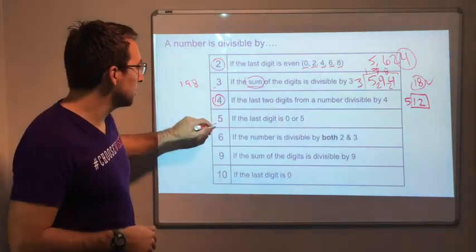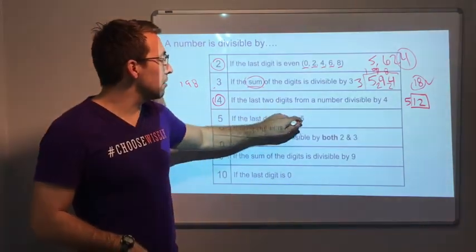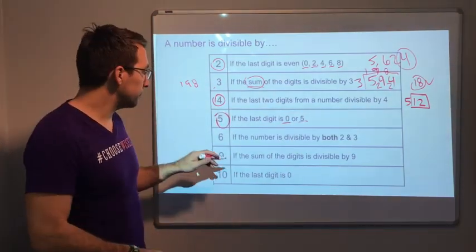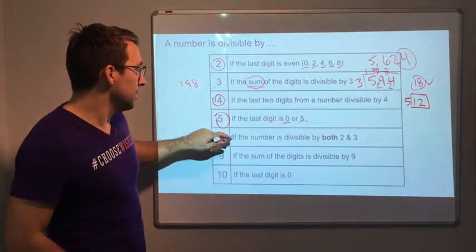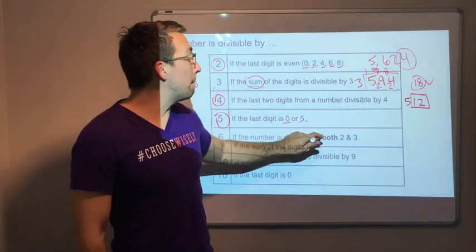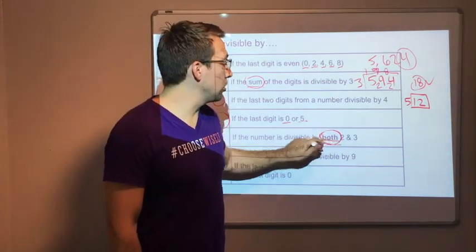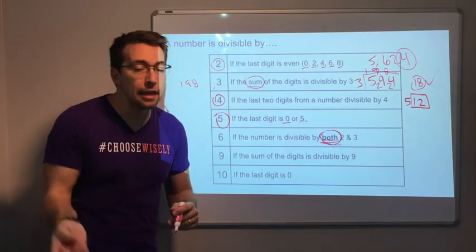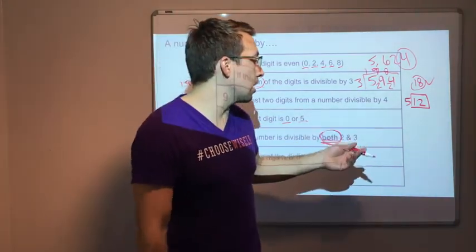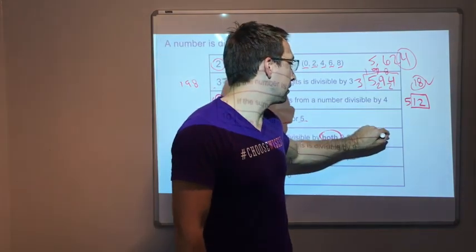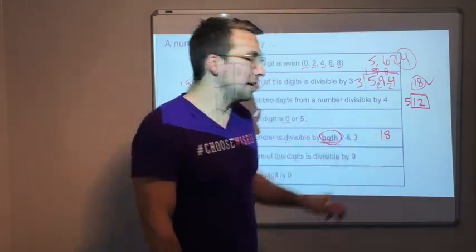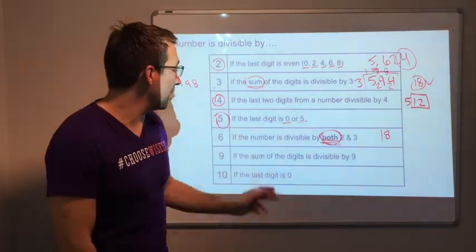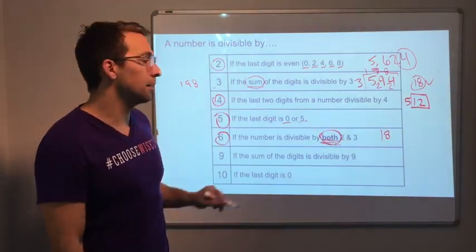Hopefully you can take these to heart. If the last digit is 0 or 5, it's divisible by 5. Excellent. If the number is divisible by both 2 and 3, then it's divisible by 6. So let's look at the number 18. 18 divided by 2 is 9. 18 divided by 3 is 6. So 6 times 3, 18.